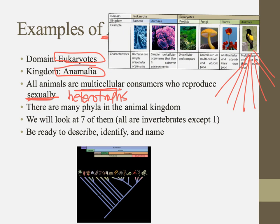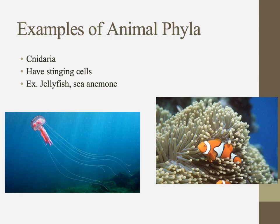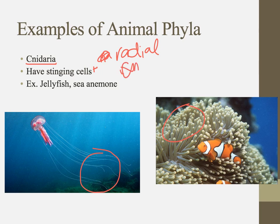There are a whole lot of phyla in the animal kingdom, and we're going to look at seven. The first is cnidaria — there's a silent C. These are things like jellyfish and sea anemones, and they have stinging cells. They also have radial symmetry, meaning their symmetry radiates in all directions — not the same in two halves, but symmetrical in all directions.